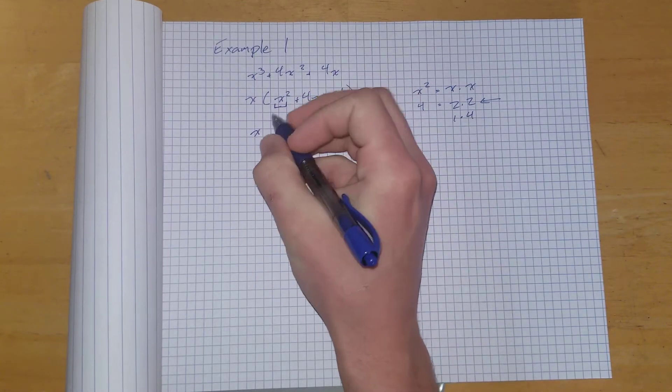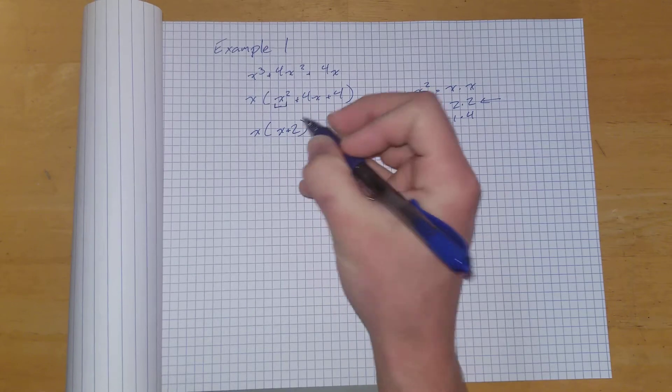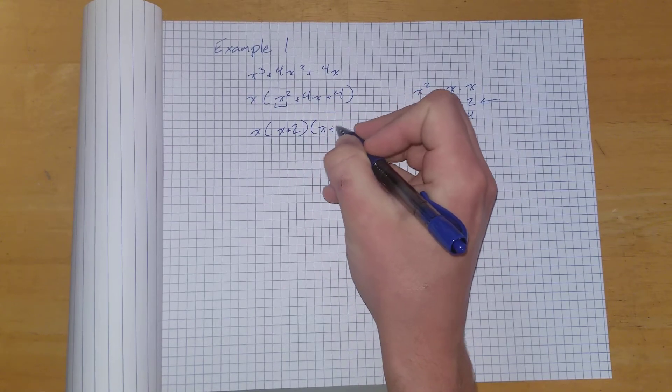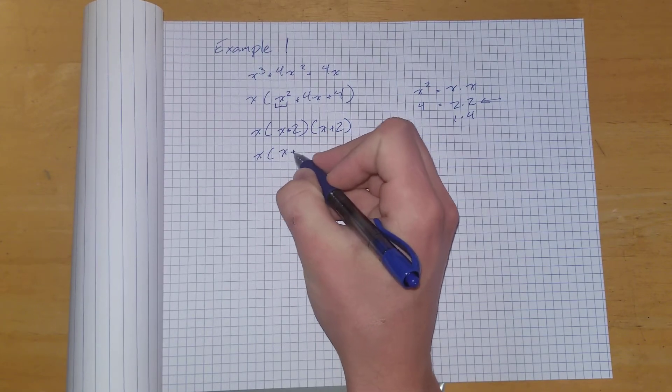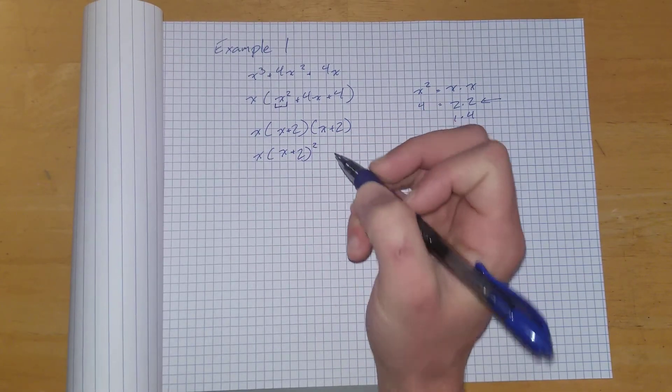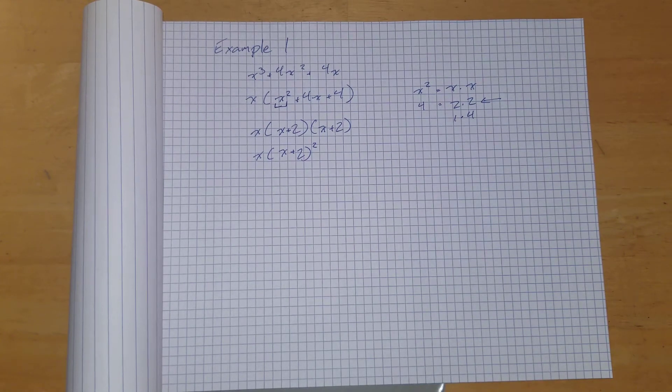So finish out factoring this out. It's going to be x plus 2. And to write it shorter, we're just going to do x plus 2 squared. So that's the answer for the first example.